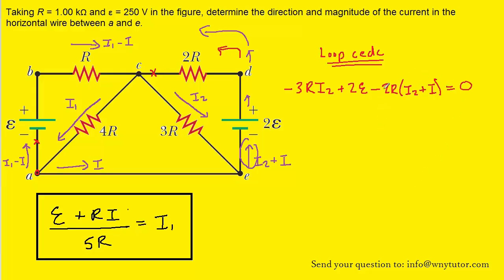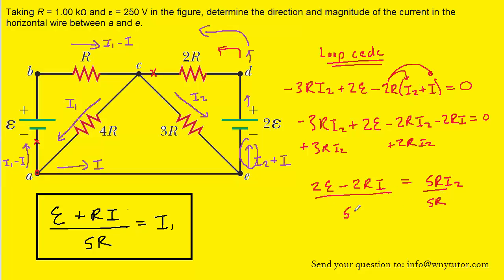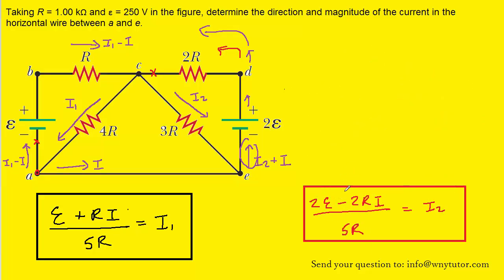We go ahead and try to solve this equation for I2. We distribute the negative 2R to both terms in the parentheses, then add 3RI2 and 2RI2 to both sides of the equation. On the right-hand side we have 5RI2, and then we divide both sides by 5R to isolate I2. We hold on to this result as well.